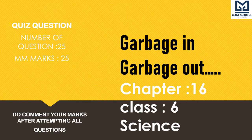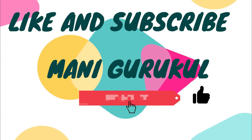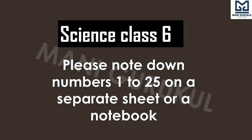Hello students, today we will do the quiz section for Chapter 16 of Classic Science: Garbage In and Garbage Out. The total number of questions is 25 and your marks are 25 — one mark for each question. Kindly comment your marks after attempting all questions. Click the subscribe button. You will be given 10 seconds to attempt each question and answers will be provided at the end. Please note down numbers 1 to 25 on a separate sheet or in a notebook.